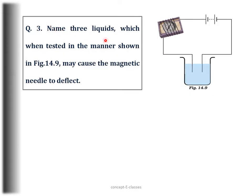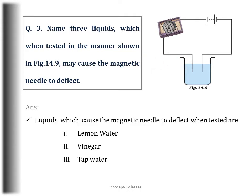Question number 3: Name three liquids which, when tested in the manner shown in figure 14.9, may cause the magnetic needle to deflect. The magnetic needle deflects only when there is a presence of electric current, so we have to name three liquids that are good conductors of electricity. The answer is lemon water, vinegar, and tap water.